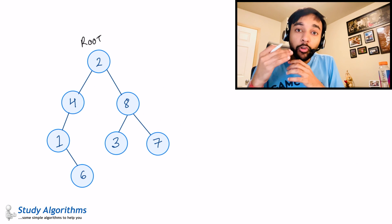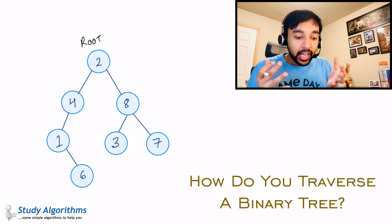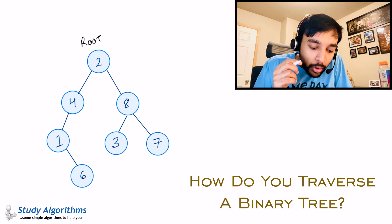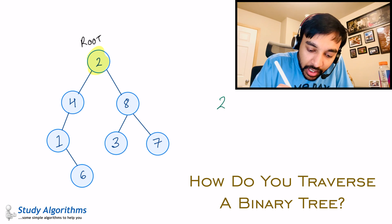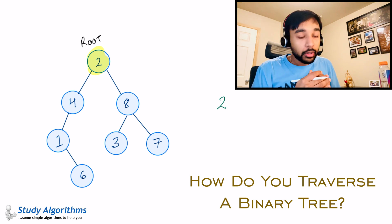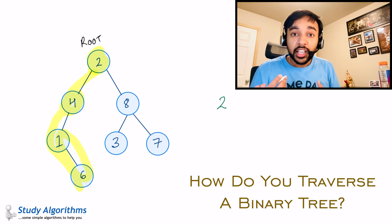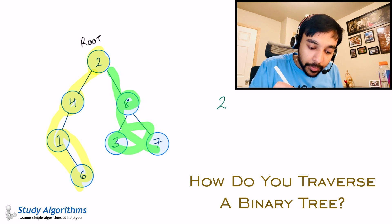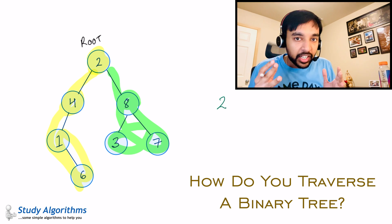So now the question is: what happens if you want to traverse a binary tree? You have this tree in front of you and someone asks you to go through all the values. Where do you start? Root looks like a good starting point. So you start from 2 — then what? Which direction do you go, left or right? If you go left, you include all those values, but in what order? If you go right, you can go through those values, but again in what order? And how do you keep track of it?